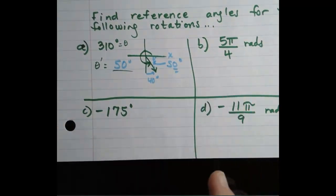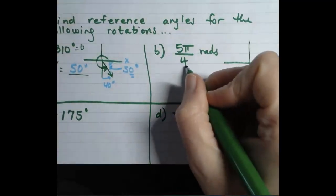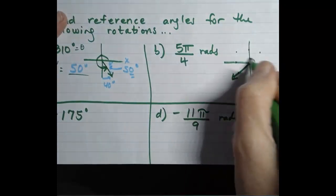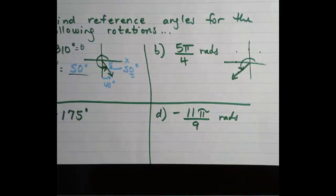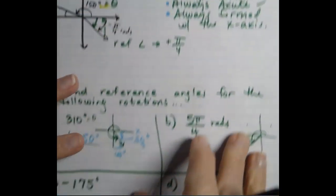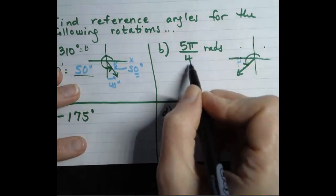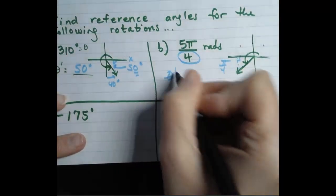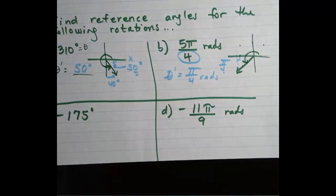Let's do 5π over 4. Thinking in fourths — 1 fourth, 2 fourths, 3 fourths, 4 fourths, 5 fourths — here's the 5π over 4 rotation. Obviously 5π over 4 is bigger than π, so it doesn't fit in a right triangle. We drop an altitude to the x-axis. How far are we from the x-axis? π over 4 units away. Therefore our theta prime is π over 4 radians.